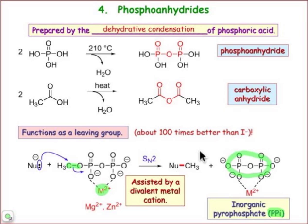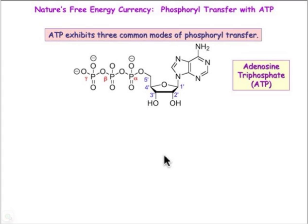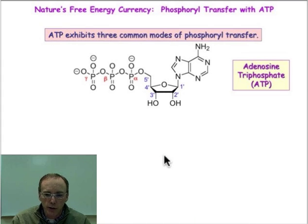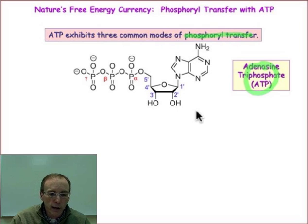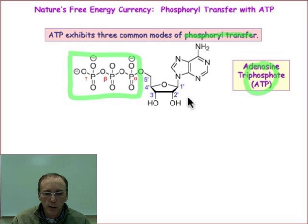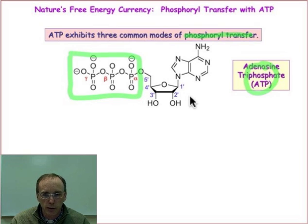What else are the phosphoanhydrides capable of doing besides substitution chemistry? This is where they play their role in energy storage — the reaction known as phosphoryl transfer. For the molecule ATP, adenosine triphosphate whose structure is shown here, the energy storage part of the molecule is the triphosphate portion. The other part serves as a recognition element that can dock in enzyme active sites.